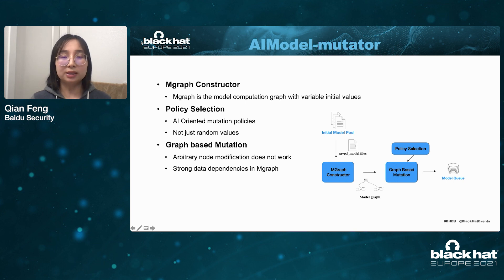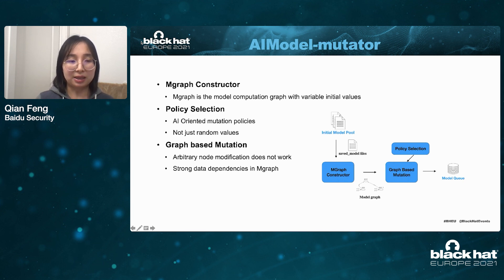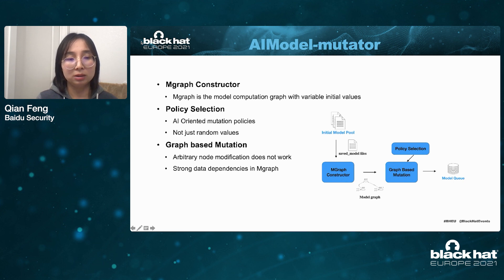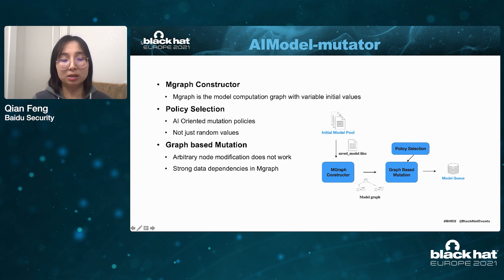Here is our overall architecture. It includes the AMGraph constructor, policy selection, and graph-based mutation. The AMGraph constructor takes the saved model from file and converts it into the model graph. Policy selection randomly selects from the predefined policies we discussed. And the graph-based mutation conducts input tensor mutation, placeholder mutation, or opnode mutation on this graph.